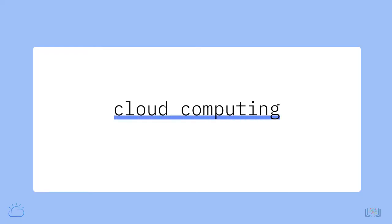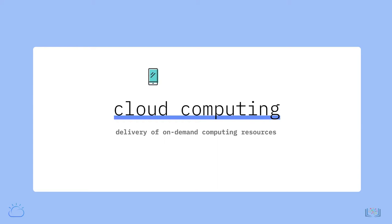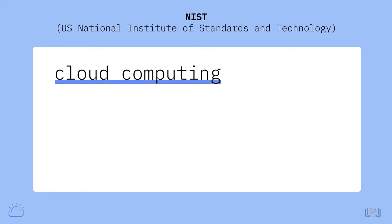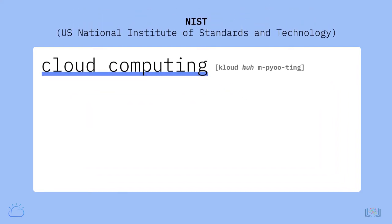Cloud computing, also referred to as the cloud, is the delivery of on-demand computing resources — everything from applications to data centers — over the internet on a pay-for-use basis. To get a common understanding of cloud computing, let's start with the US National Institute of Standards and Technology (NIST)'s definition of cloud computing.